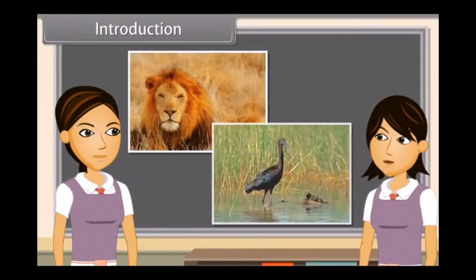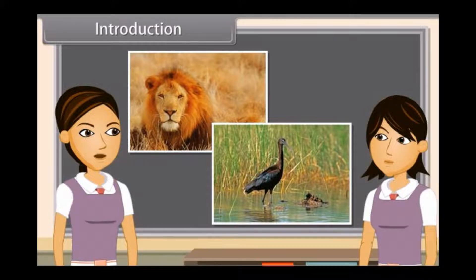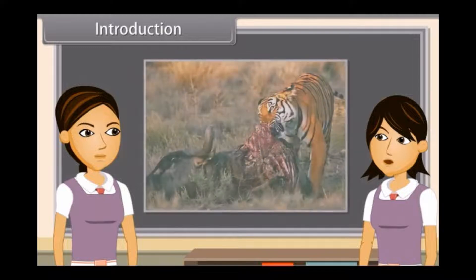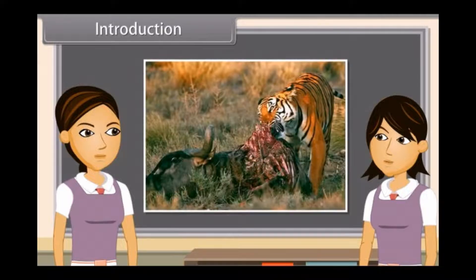We know that animals are heterotrophic and hence they depend on other organisms for their food. Animals need an external source of food. So we can also say that they depend upon ready-made food, and this may come either from plants or from other animals.